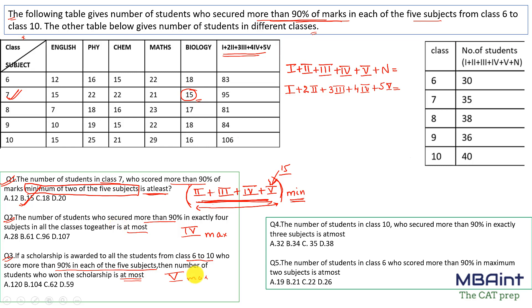The maximum value of exactly 5 in each class equals the least value among that class's set numbers. For class 6: 12, class 7: 15, class 8: 7, class 9: 10, class 10: 15. Summing these: 12 + 15 + 7 + 10 + 15 = 59. The answer to question 3 is 59 (option D).